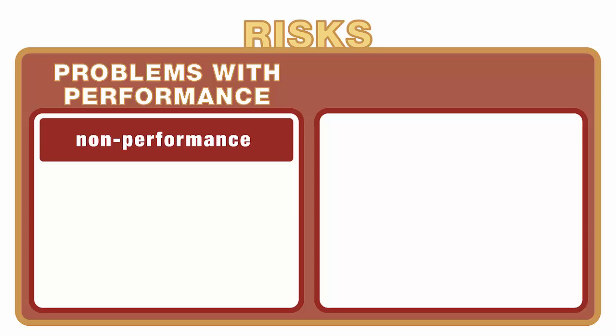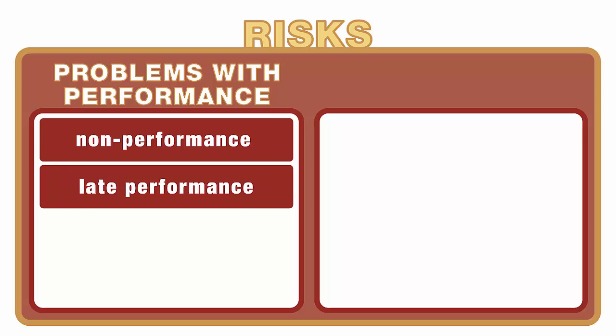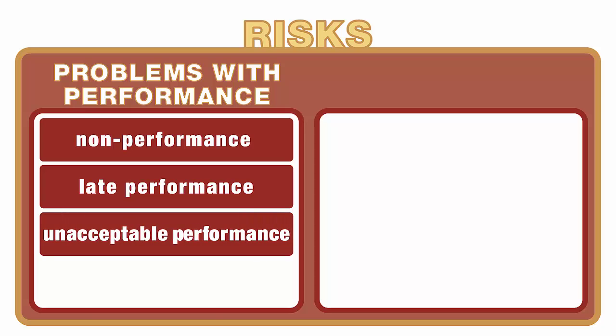Another problem with performance that often arises is late performance — meaning goods that were to be shipped in May are not shipped until October, or payment that was to be made in June was not made until September. Those are issues of late performance. Unacceptable performance relates to issues where the goods were shipped but the goods were not conforming to the terms of the agreement, and therefore, although the contract was performed, it was unacceptable performance.